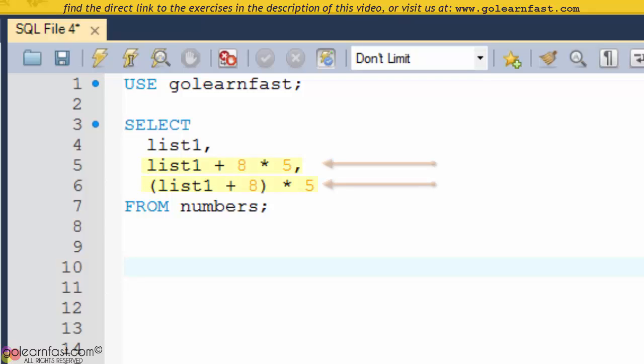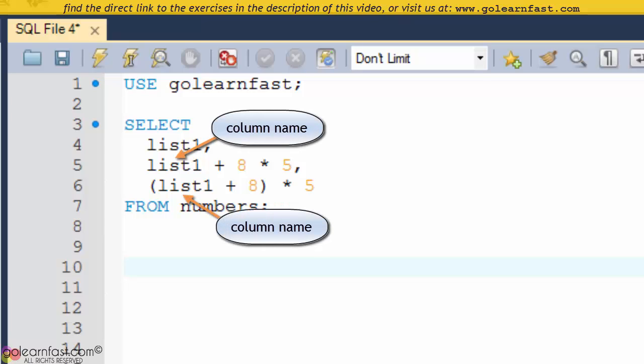Here, the expressions in the second and third columns both perform the same operations. These expressions use one column name and two literal values for numbers.